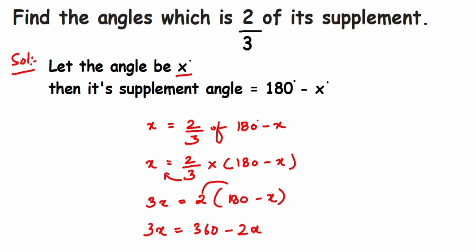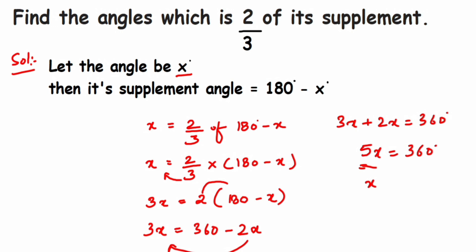To get the value of x, I bring all variables to one side and constants to the other. Taking 2x to the left-hand side, minus 2x becomes plus 2x. So 3x plus 2x equals 360 degrees, which gives 5x equals 360 degrees. Transposing 5 to the other side gives x equals 360 divided by 5, which equals 72 degrees.